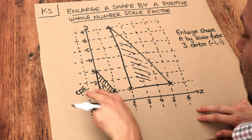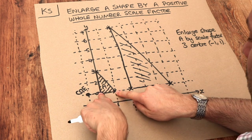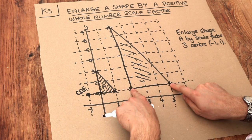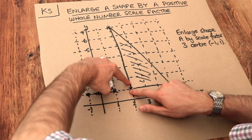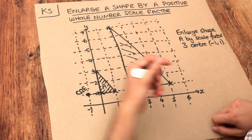And notice by the way that the width of this shape here, that was one square, it's now three squares, it's three times as wide. And the height was two squares, this height is six squares, so it's become three times as high.